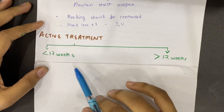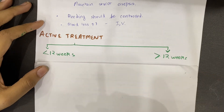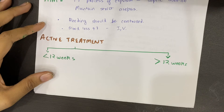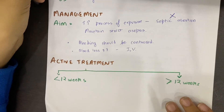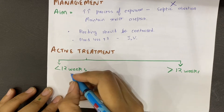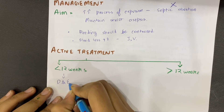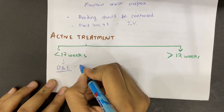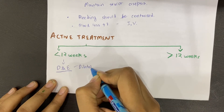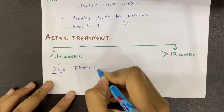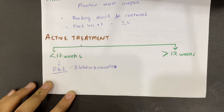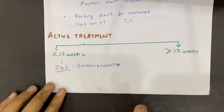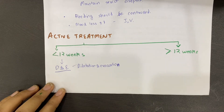Next is active treatment. Active treatment depends upon what time and situation the woman has come to us. If inevitable miscarriage with clinical features presents at or before 12 weeks, then we perform D&C — Dilatation and Curettage — which means cervical dilatation followed by evacuation of the dead fetal material present in the uterus. This is done under general anesthesia with uterine cavity curettage.